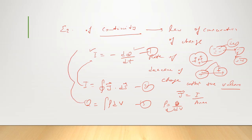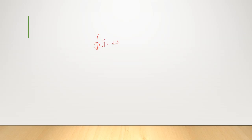Now substitute the expressions for current (equation 2) and charge (equation 3) into equation number one. Therefore equation one becomes: ∮J·dS = −∂ρ/∂t dV. This is equation number four.